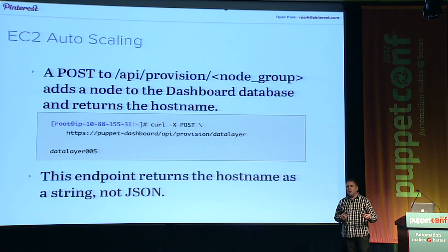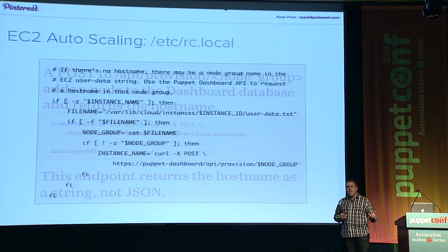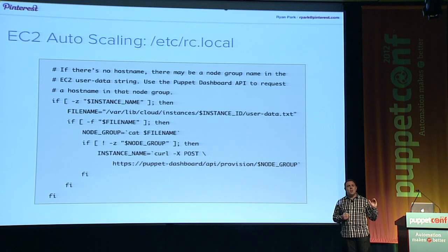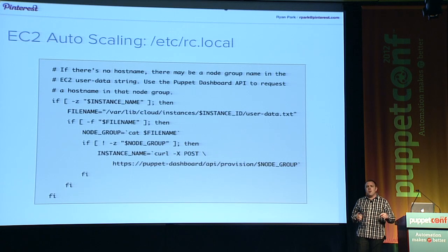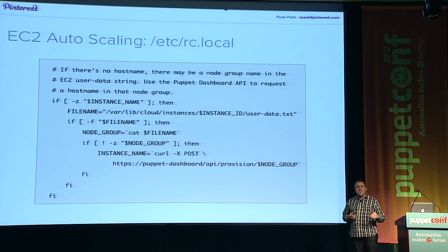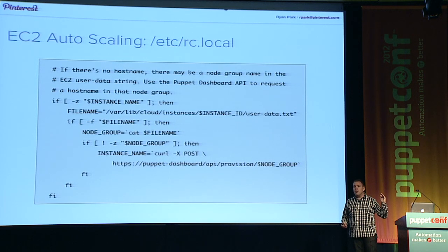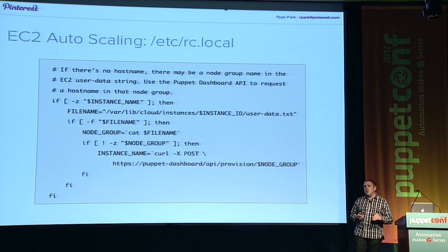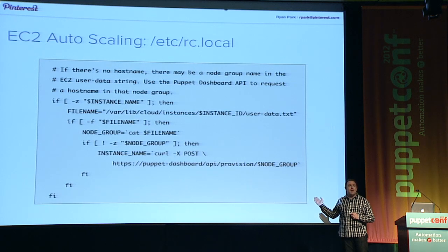One nice thing is that this endpoint returns just a string, not JSON, so we can use it directly in that RC local script instead of just setting the host name from the EC2 tag. The code sets the host name by pulling the node group name from EC2 user data — which is another way to pass data into an instance, either as XML, JSON, or a simple string. We pass in the name of the group the node is supposed to be in. The node then goes out and asks the Dashboard API to give it a real name, and then continues on with running the rest of the Puppet run.